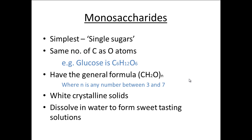Monosaccharides — these are sometimes known as simple sugars. You can sometimes see the formula for these simple sugars. For instance, glucose is C6H12O6. So the carbon and the oxygen are in the same proportion and there's double the amount of hydrogen.